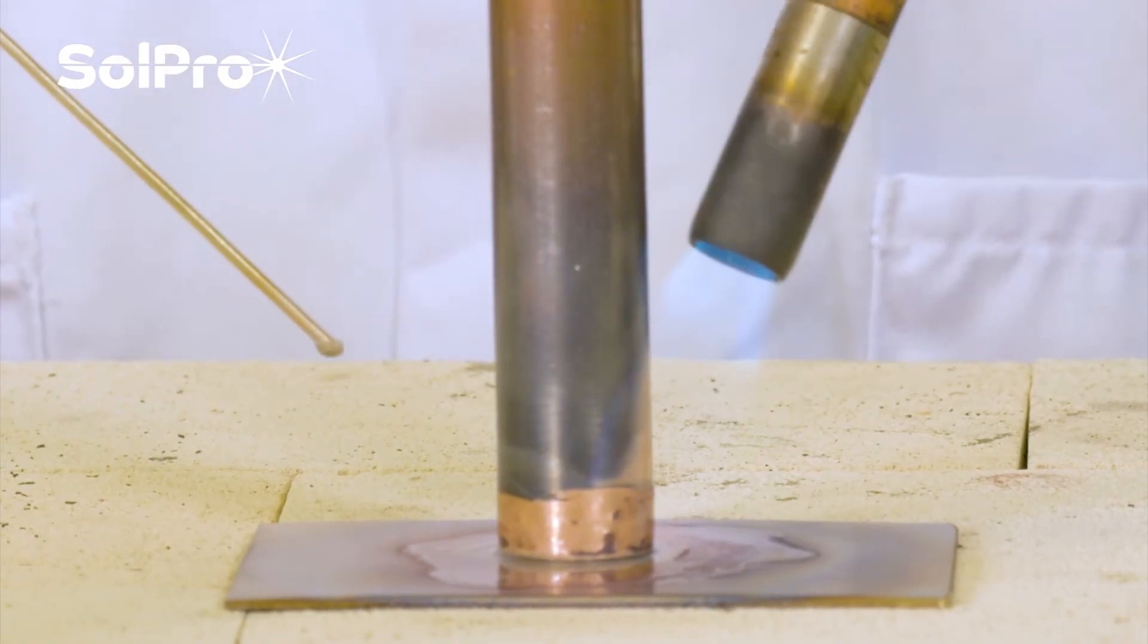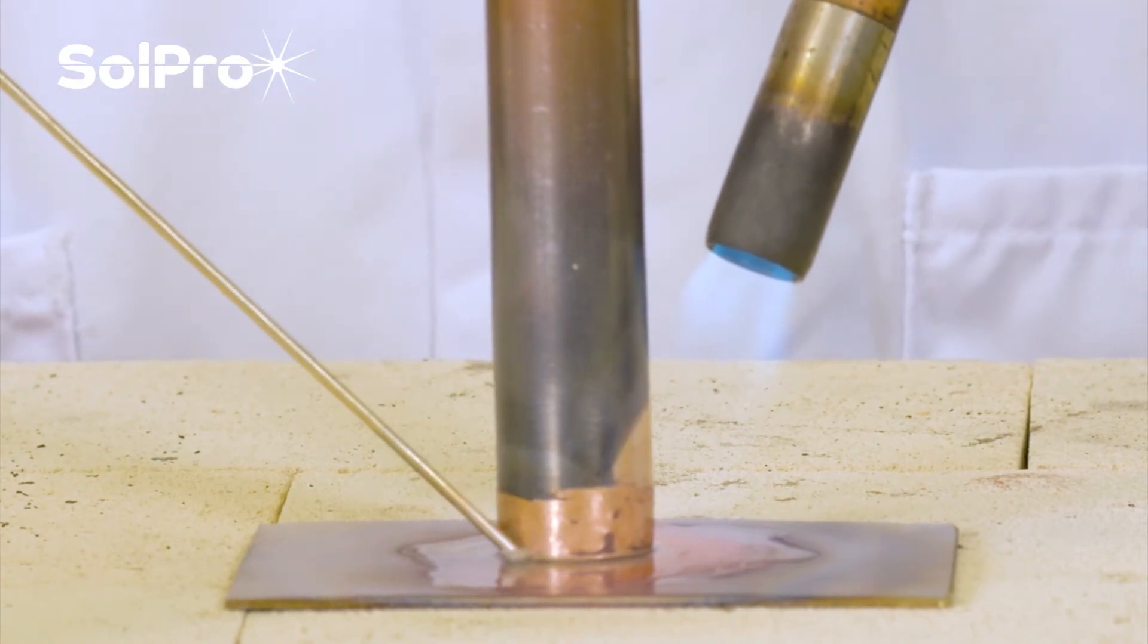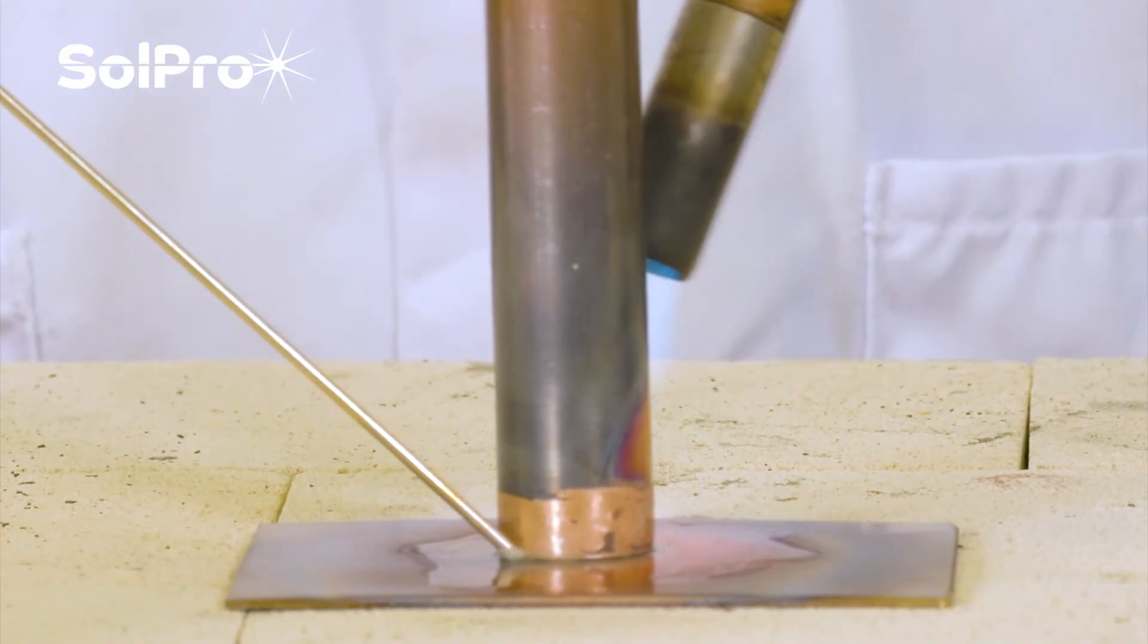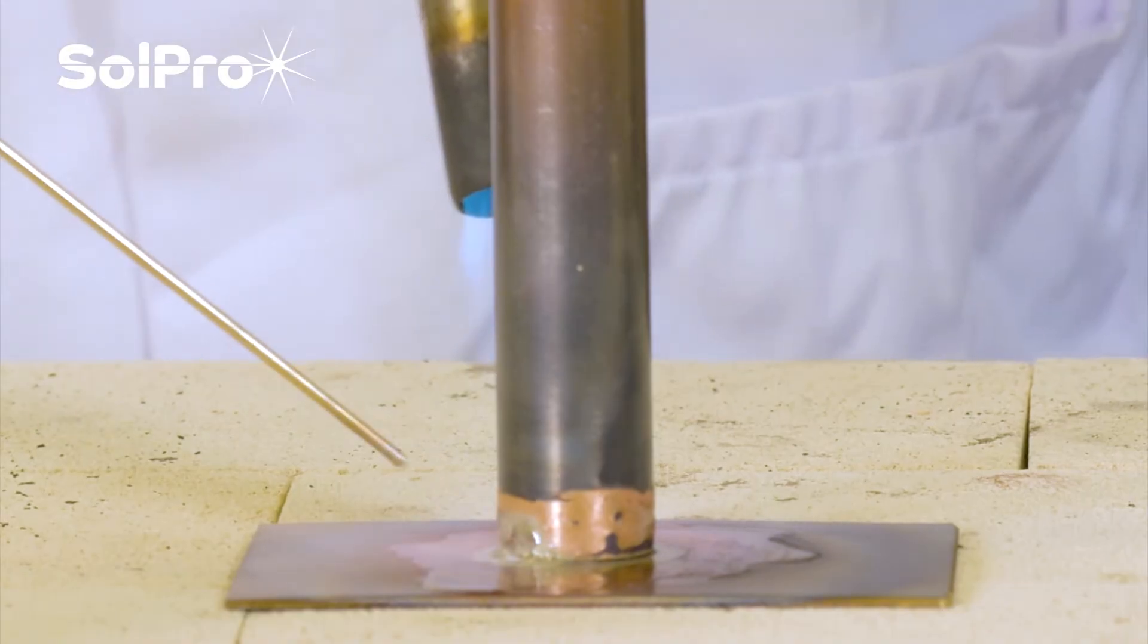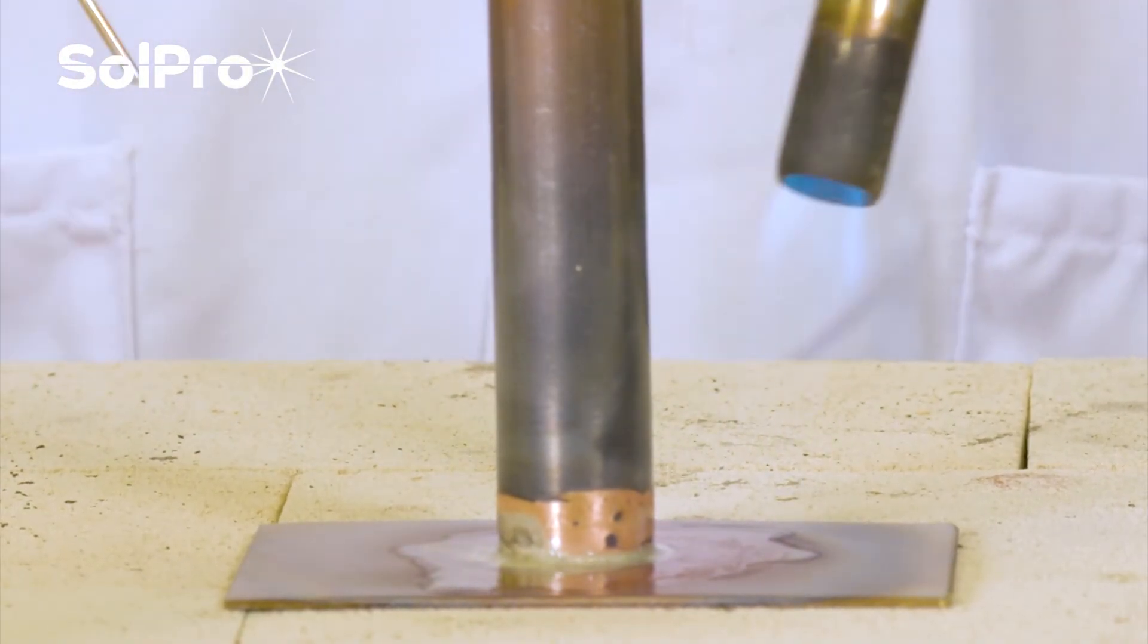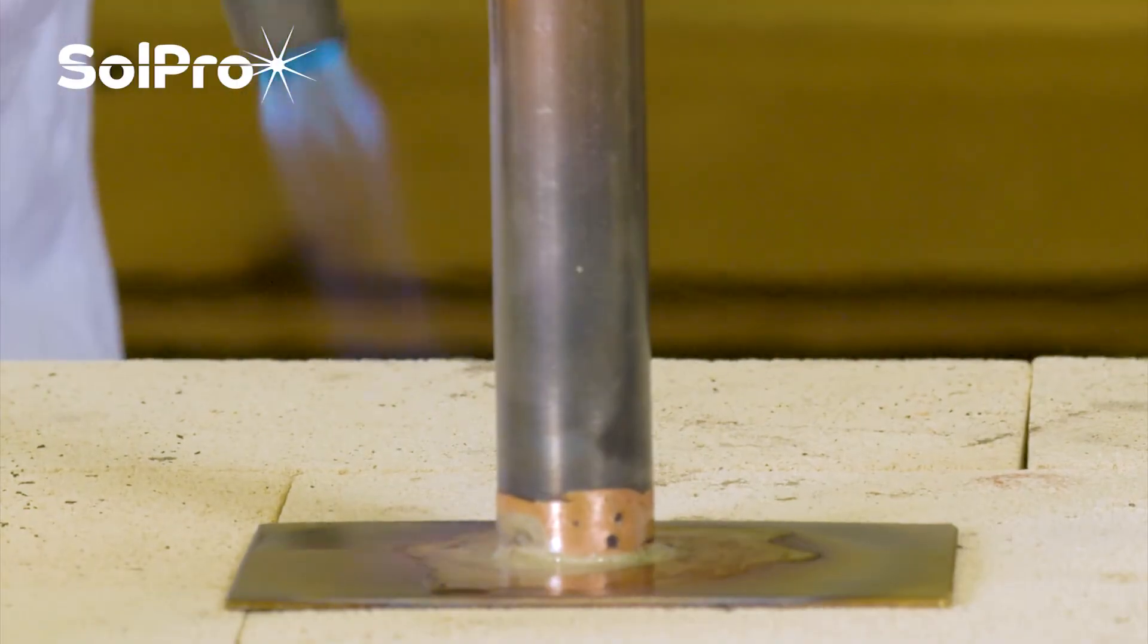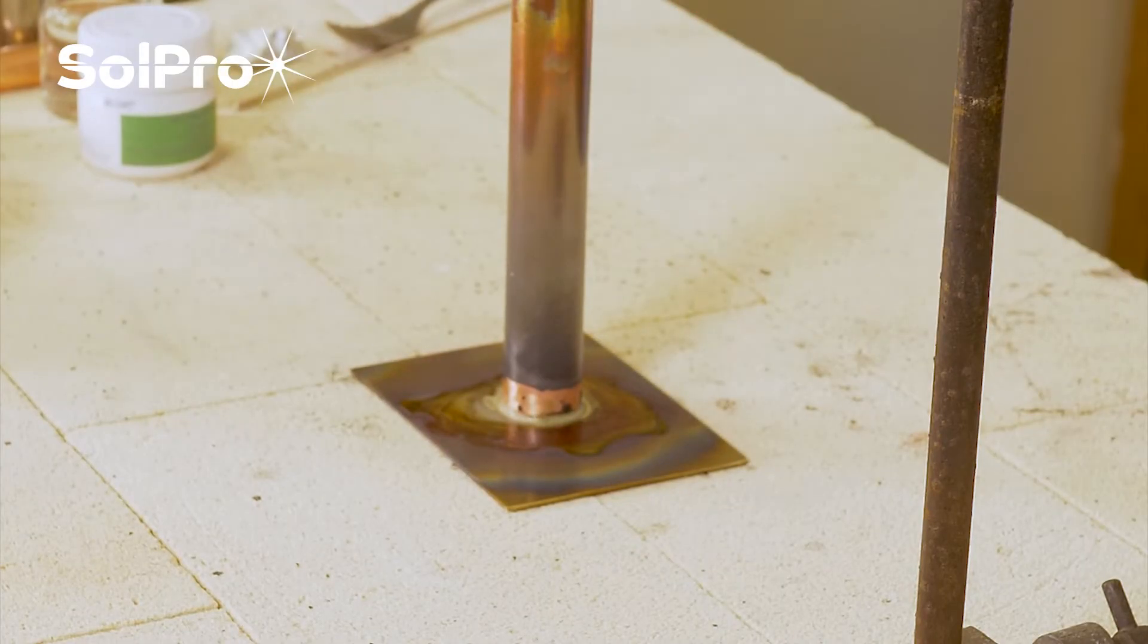We've got to keep it moving, keep it moving, and then hopefully if I apply the brazing alloy—there we go, it's gone there and you can see it's worked its way round to where the heat was. That's all you need, just a small amount.